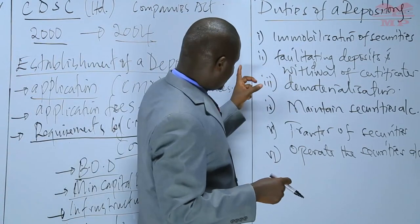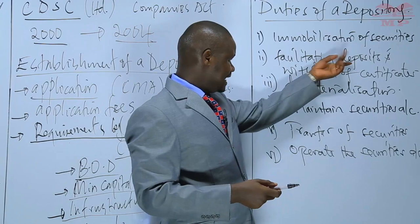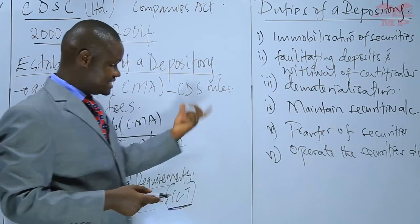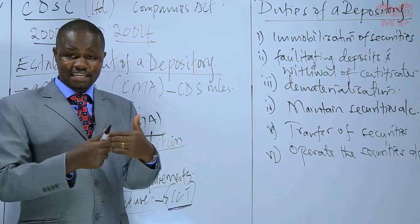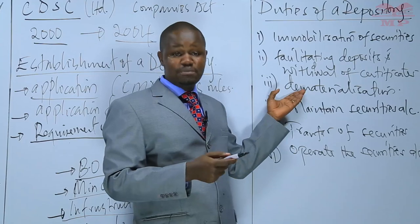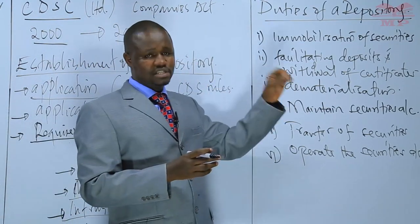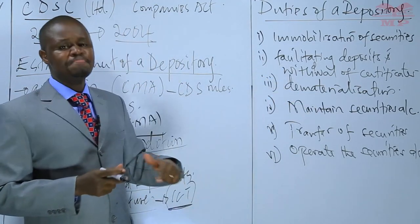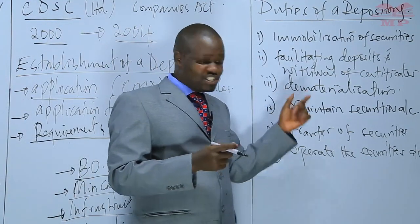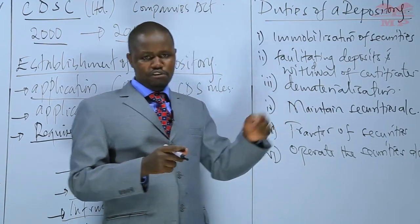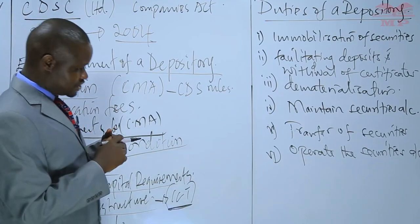Once immobilized, we come to the element of facilitating depositing and withdrawing of these certificates. Should holders of securities wish to have transactions affected in respect of their securities, dematerialization becomes necessary. From our previous class, dematerialization is the process of converting physical certificates into an electronic format. These transactions will be carried out on an electronic platform, so dematerialization becomes necessary — converting securities in physical form into an electronic form to facilitate electronic transfers.